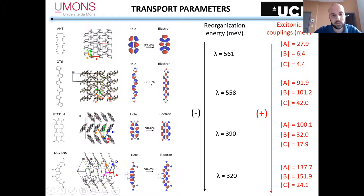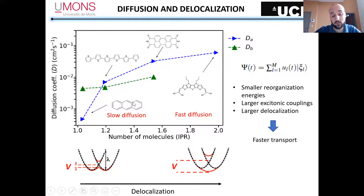We computed the diffusion coefficient from our non-adiabatic dynamics. What I'm showing is diffusion versus the number of molecules over which the exciton is delocalized. For anthracene, you have localization over one molecule, so the exciton goes through an activation barrier. Whereas for the CDSN molecule, you have delocalization over two molecules, and diffusion is one to two orders of magnitude faster.